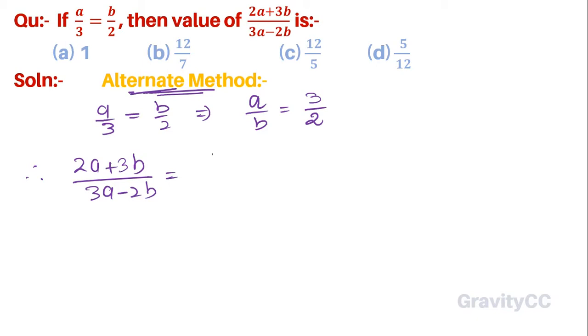Taking b as common from numerator and denominator: (2a/b + 3)/(3a/b - 2).